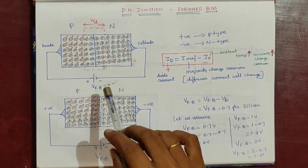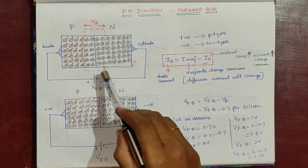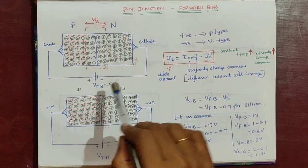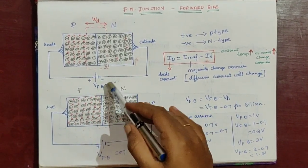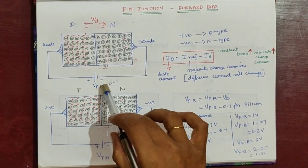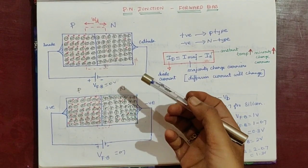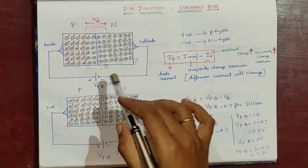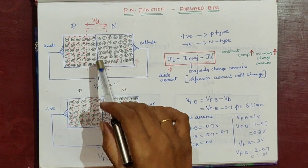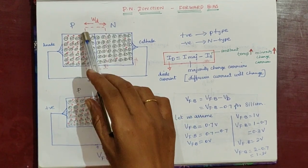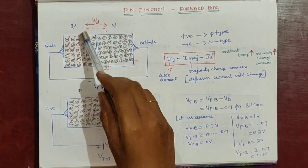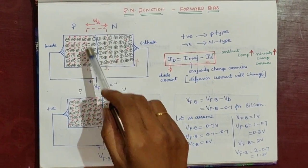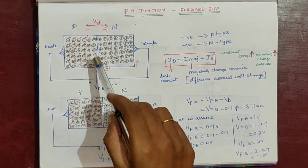When forward bias voltage is equal to 0V, it is the same as the no bias condition — forward voltage is 0V. If you look at the center portion, you can see a region shown in red color. This is the depletion region.